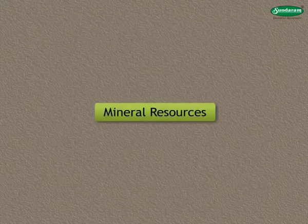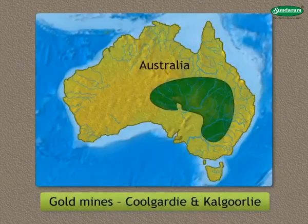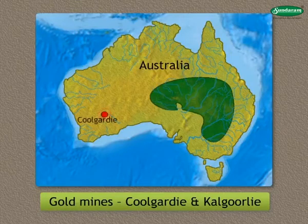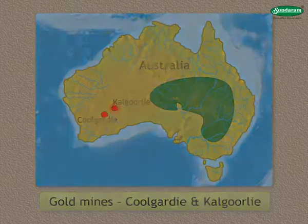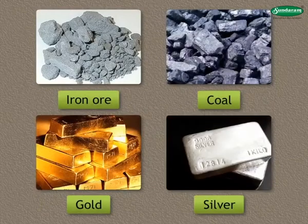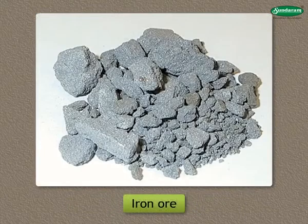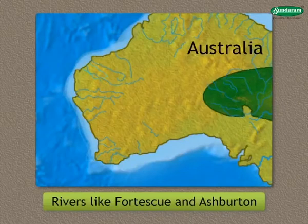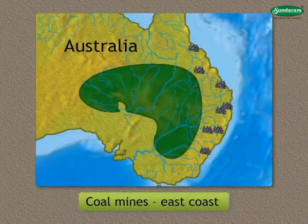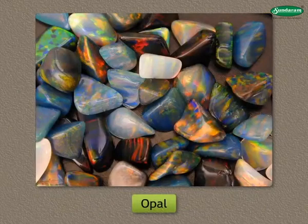Mineral Resources: This continent is a storehouse of minerals. Gold mines are located in the southern parts of Australia at Kalgoorlie and Kalgoorlie. Iron ore, coal, gold and silver are extracted from the mining areas of Broken Hills. Iron ore is found to the west in the basins of rivers like Fortescue and Ashburton. There are coal mines on the east coast. Opal, a precious stone, is also found here.